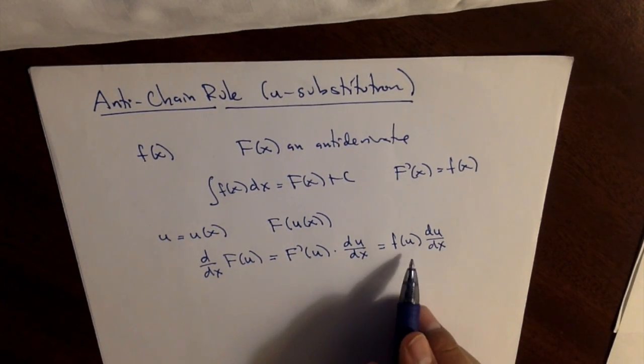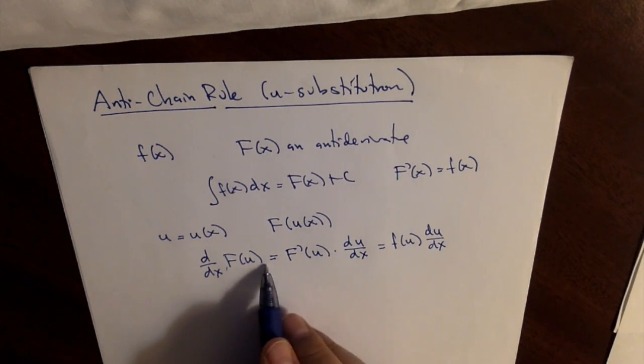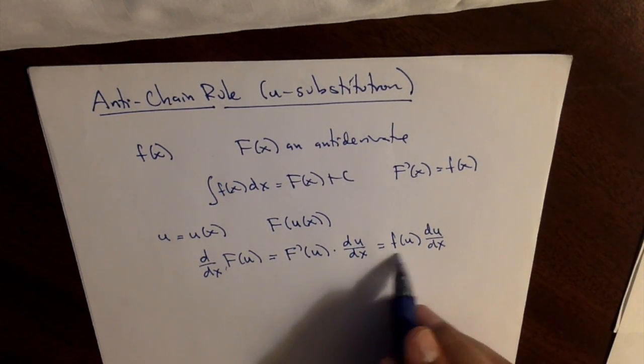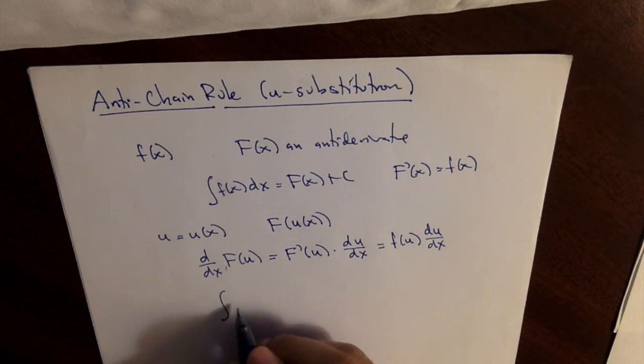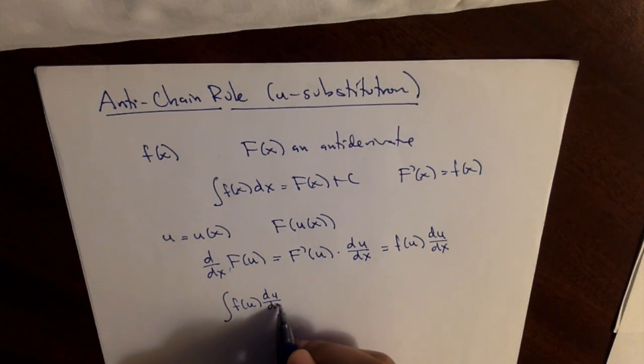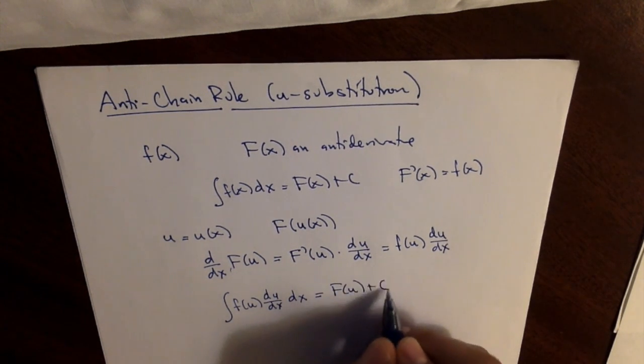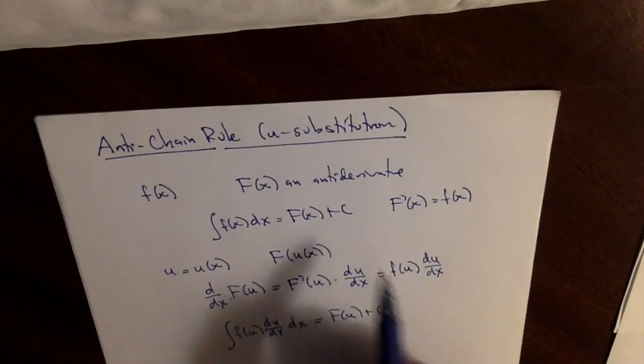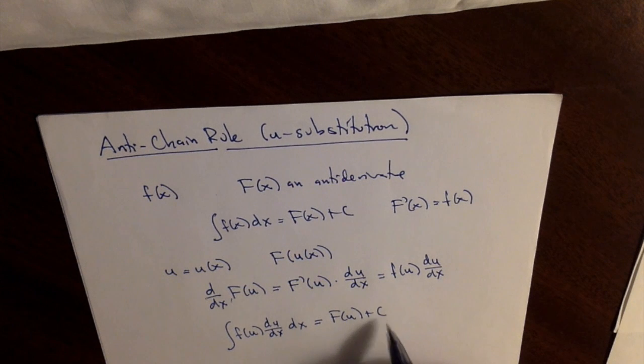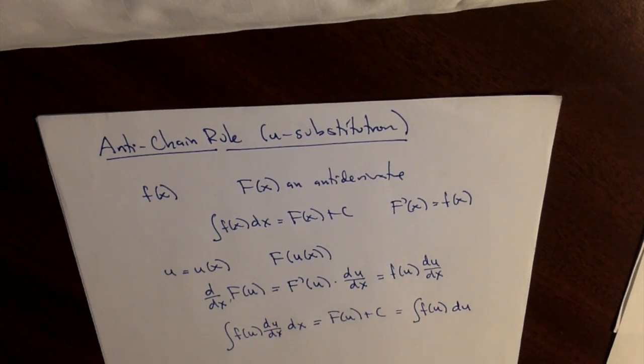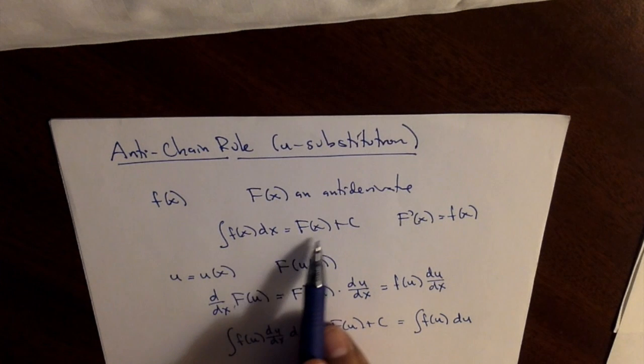But now I can say this backwards in the language of anti-derivatives. What this says is that capital F of u is a function whose derivative is f of u times du by dx. This says that an anti-derivative of f of u du by dx with respect to dx is F of u plus c. But now if you think about it, F of u plus c is an anti-derivative for f of u thought of as a function of u. So this is just this equation I have up here, except I'm just calling my variable u instead of x.